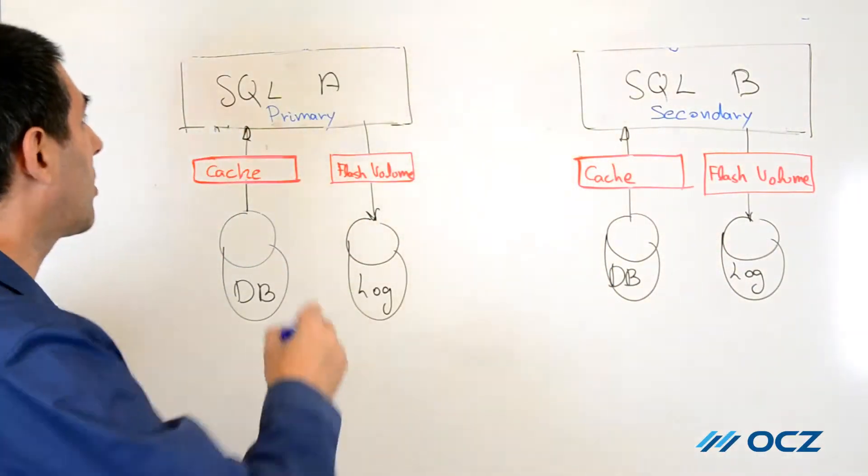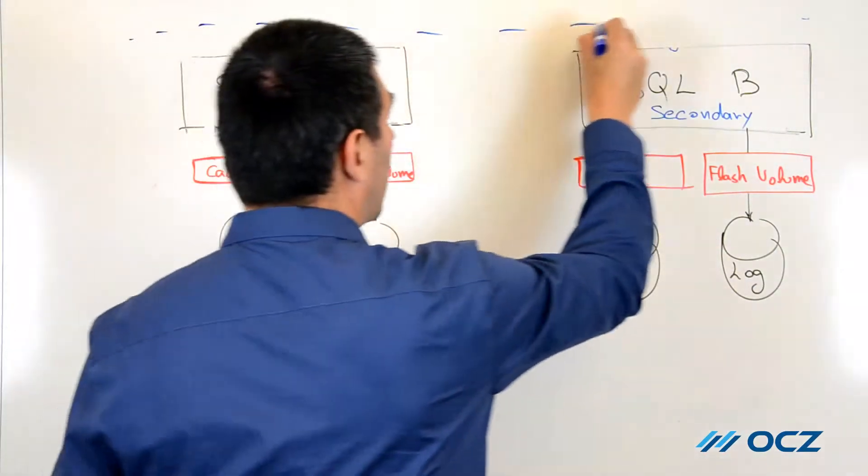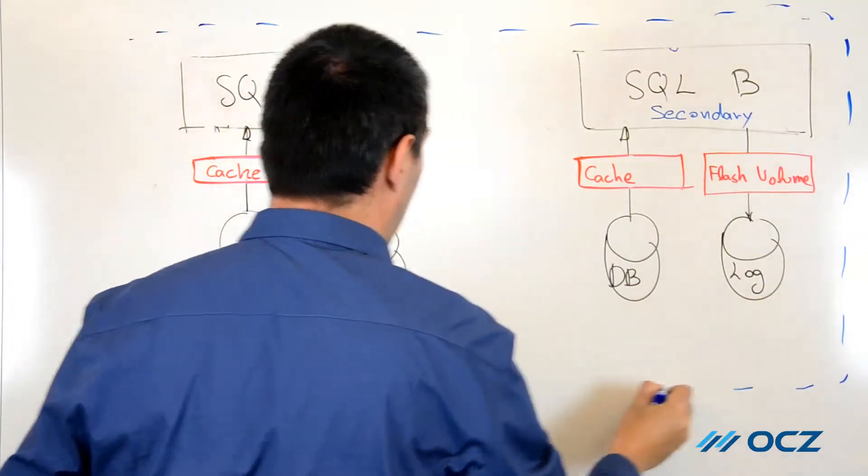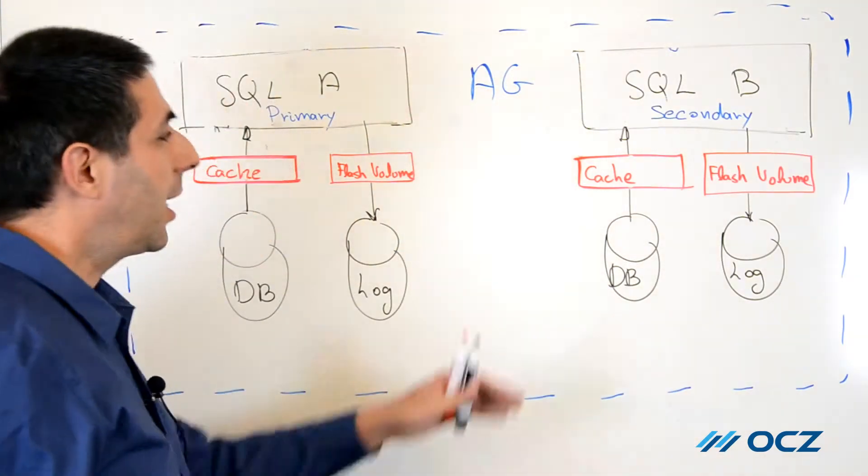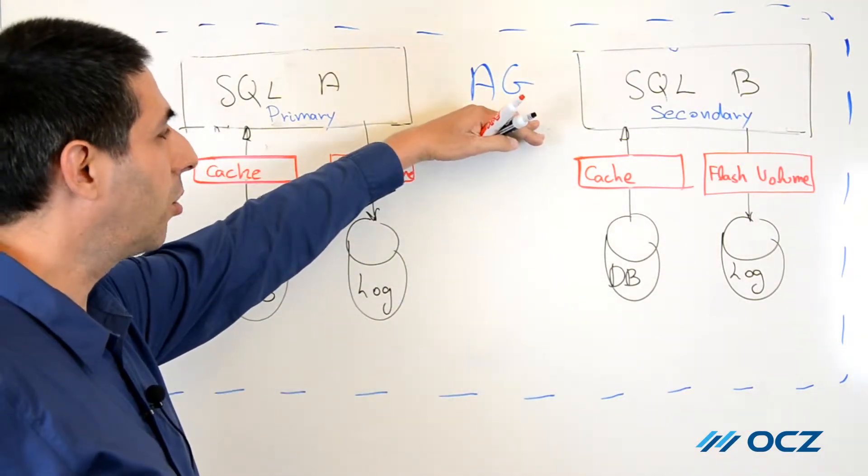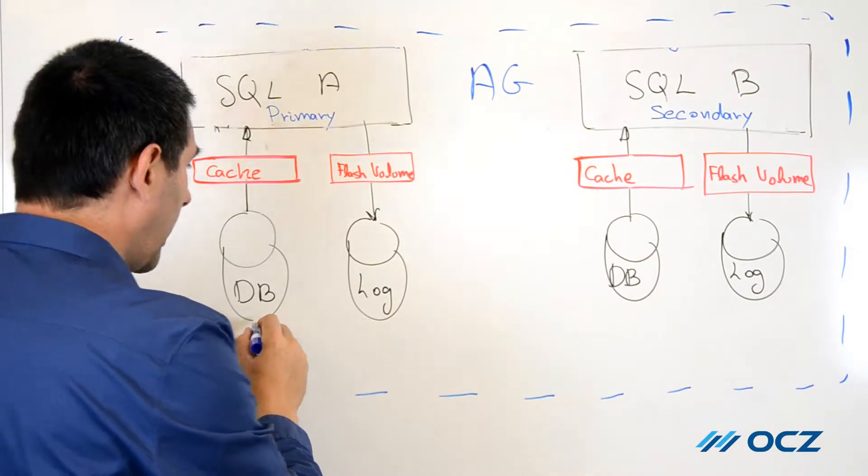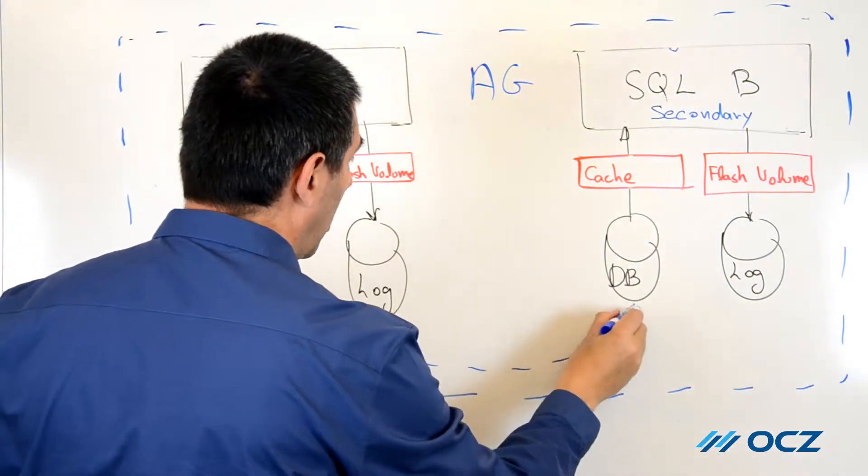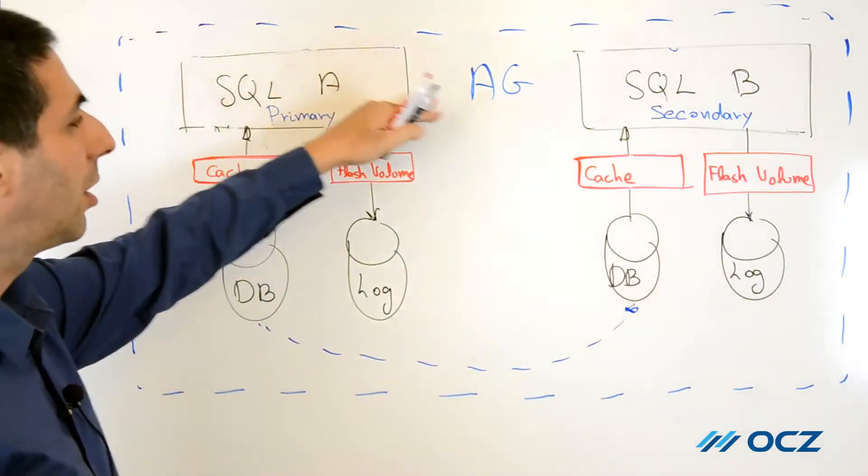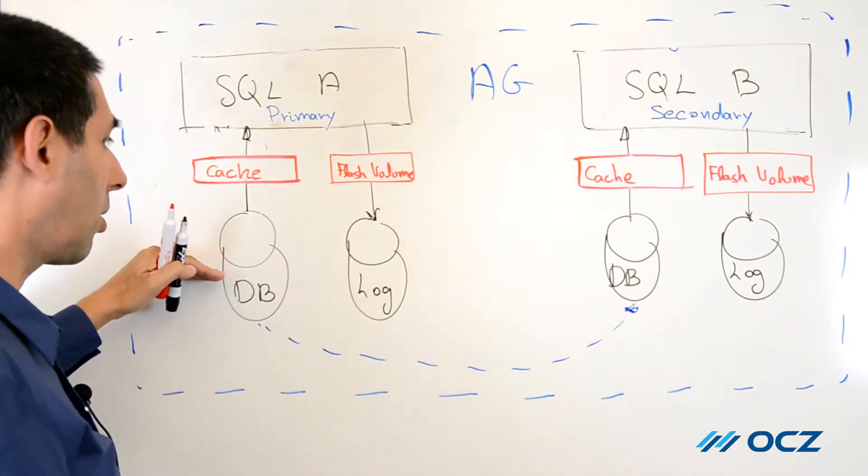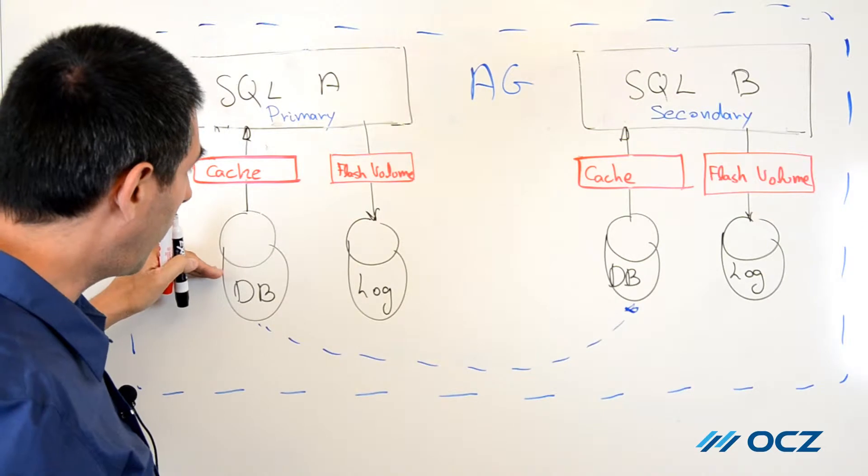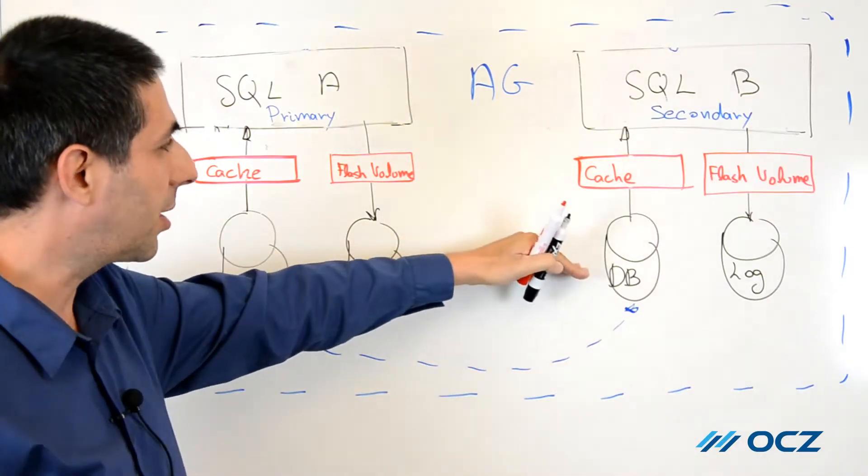Microsoft now allows defining a SQL server cluster using an availability group, which replicates data from the primary server to several secondary servers. Data is replicated synchronously or asynchronously from the primary database to the secondary databases.